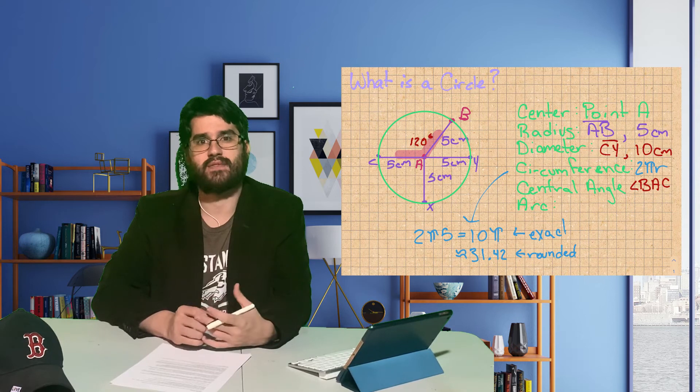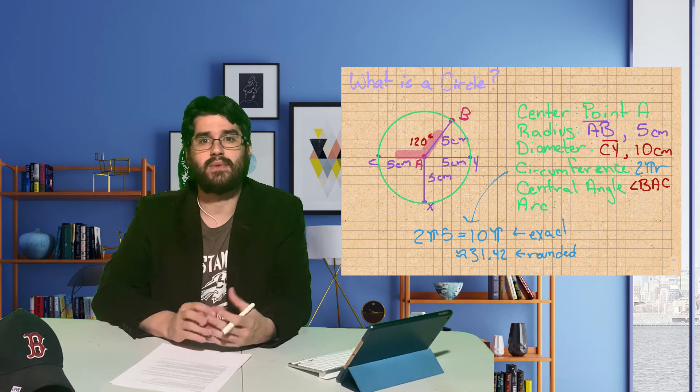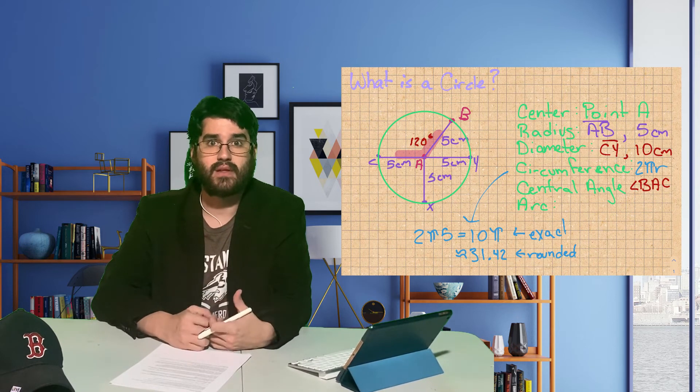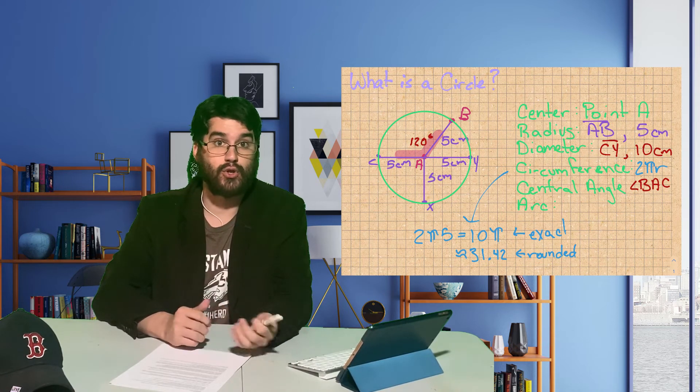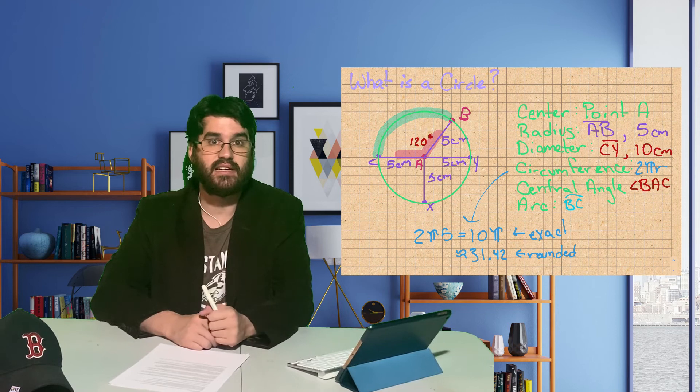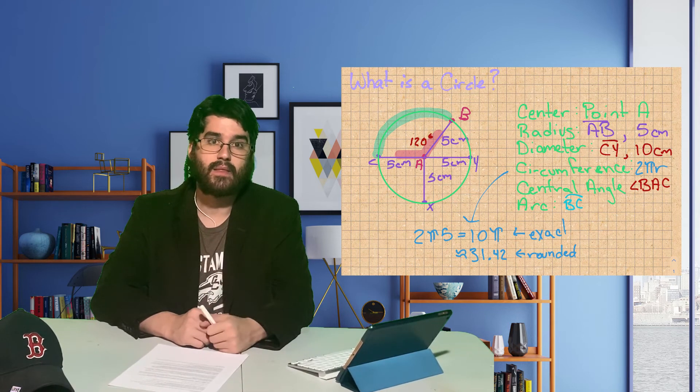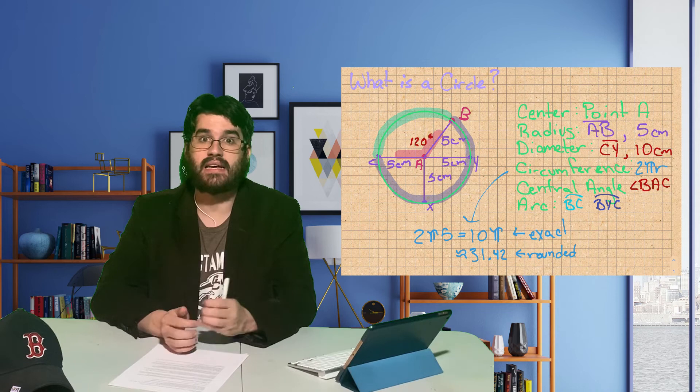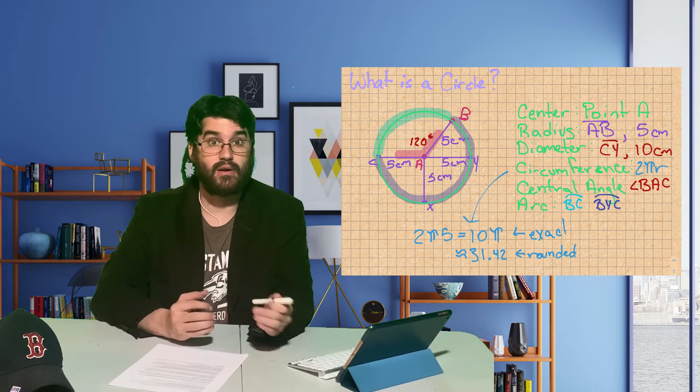Minor arcs are named by both endpoints of the circle, whereas major arcs, we need to list a point that's in between so we know to go the long way around. For example, arc BC in this circle is a minor arc. However, arc BYC is a major arc.